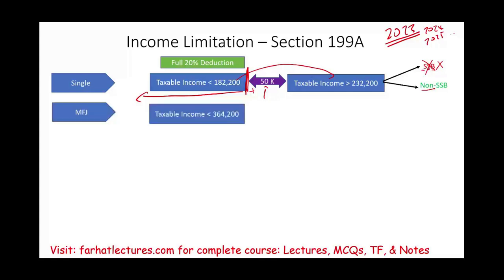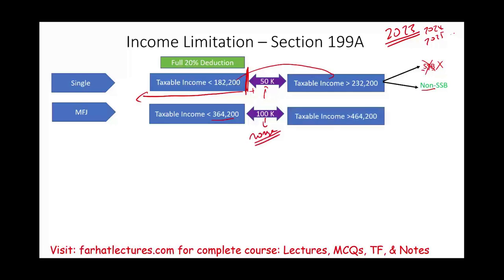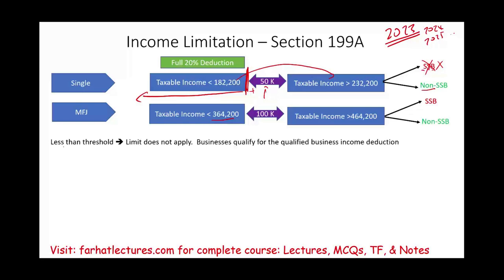For married filing jointly, the phase-out starts at $364,200, again for 2023, with a $100,000 range up to $464,200. Less than the lower threshold — no limits apply; the business will qualify with no issues. Within the range — we'll have to do a computation. Above the upper threshold — if you're SSB, you're done; if you're non-SSB, we have to do some computation.